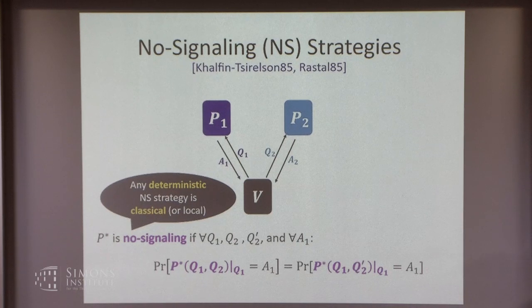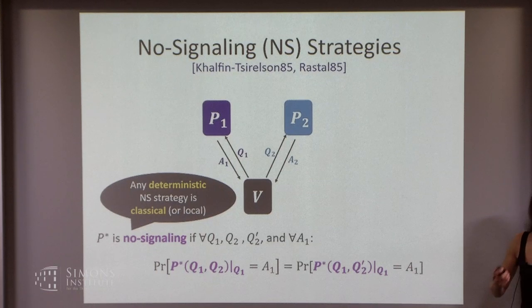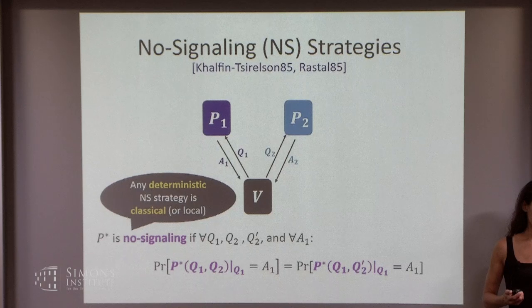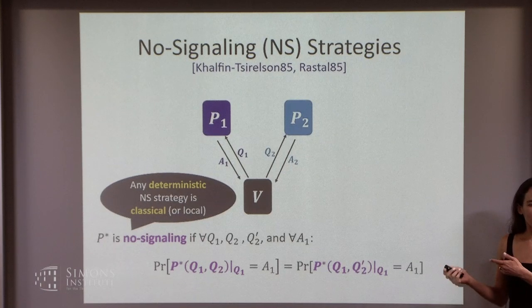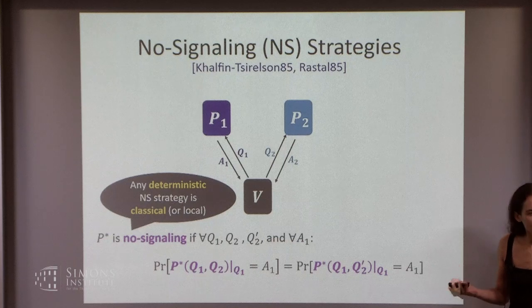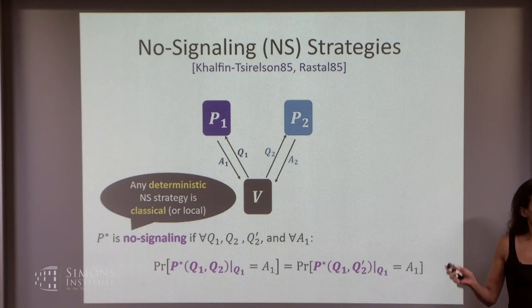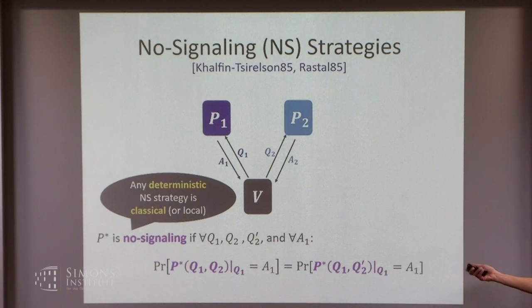The power of the no-signaling model stems from the fact that the prover can actually be randomized. Even though you may think: you're randomized, but what can he do better than being deterministic? It turns out he can, and we're going to expand on this in a bit.